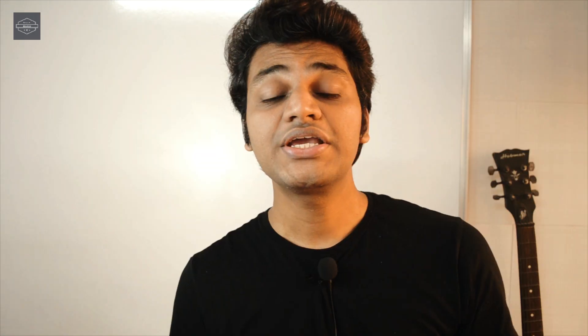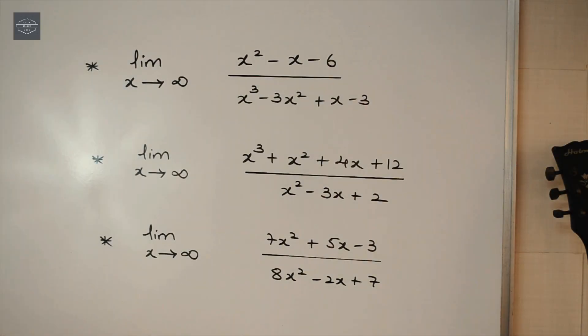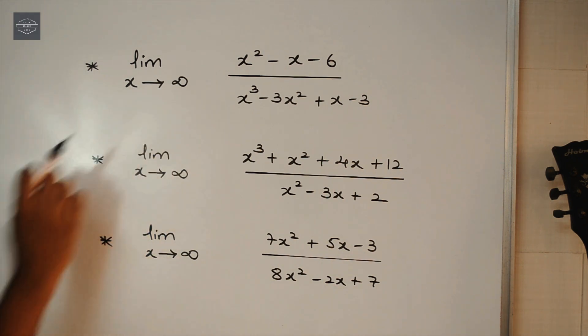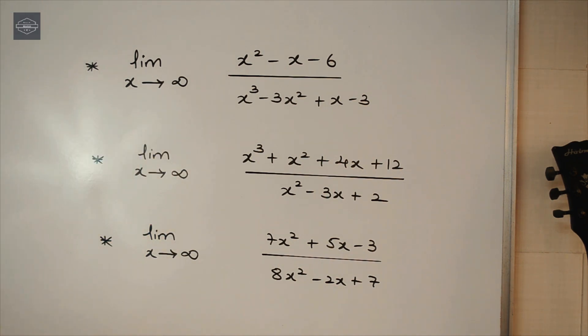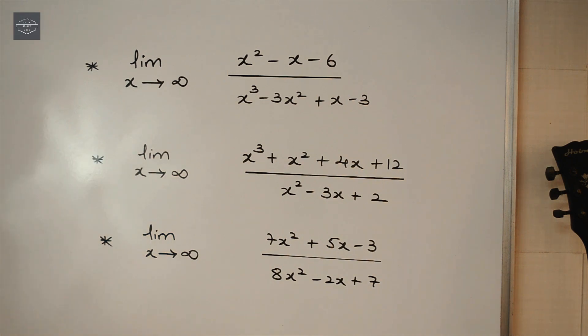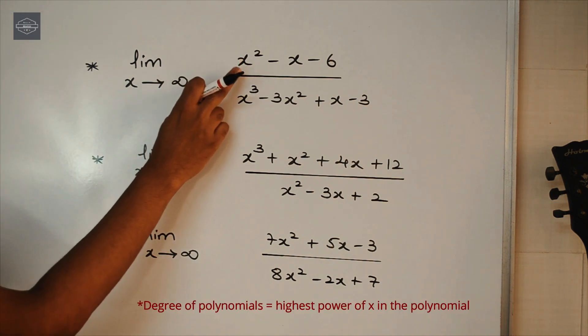Alright, so we just have to keep these three cases in mind whenever we are dealing with questions based on limit x tends to infinity, and we can quickly get the answer in a matter of a few seconds. Let's apply this technique and solve some questions. While solving, first check that the limit is x tends to infinity, then check the degree of the polynomials in the numerator and denominator — that is, the highest power of x in the polynomial.